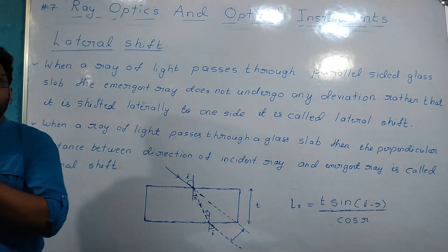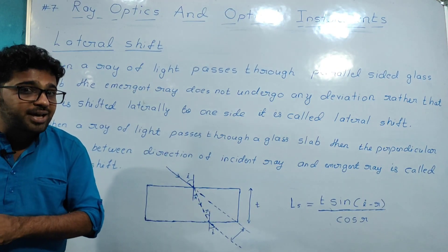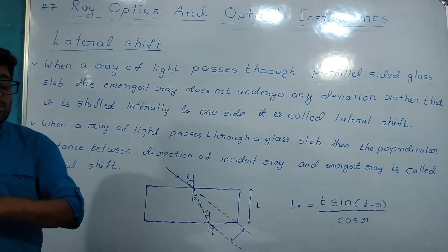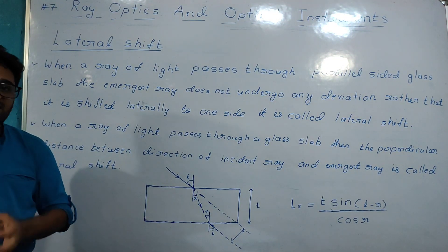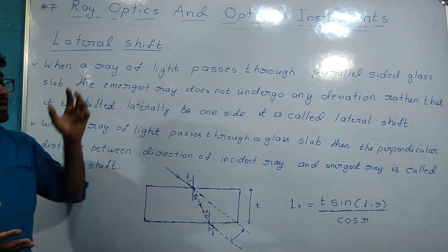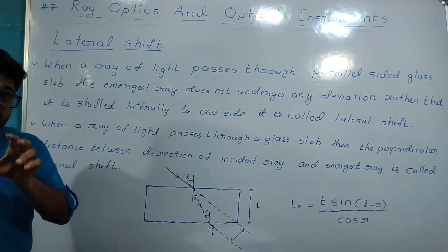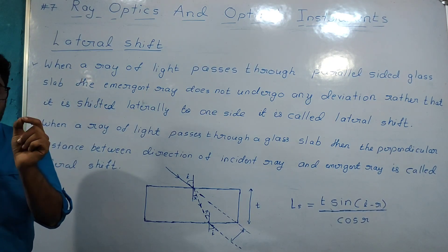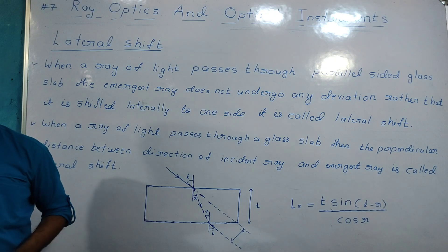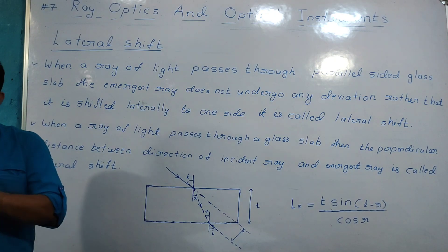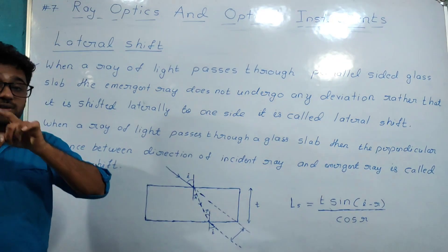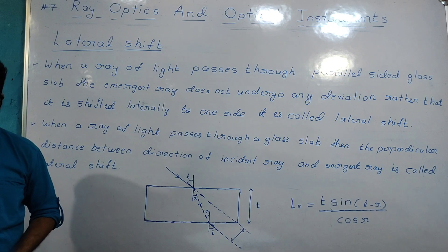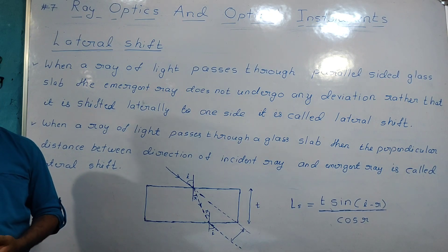Lateral shift depends on the refractive index of the material of the glass slab, the thickness of the glass slab, and the angle of incidence and angle of refraction. These are the key factors that determine the lateral shift.